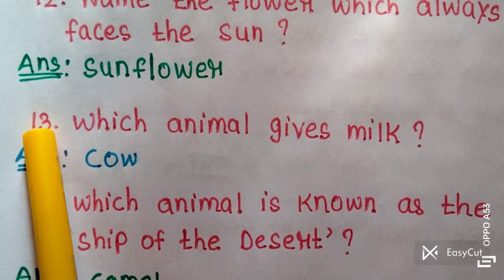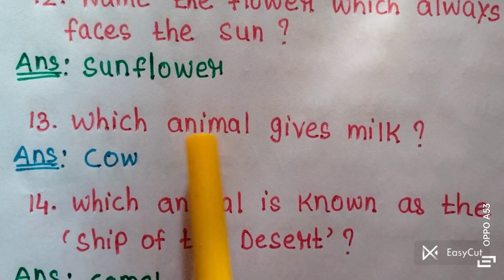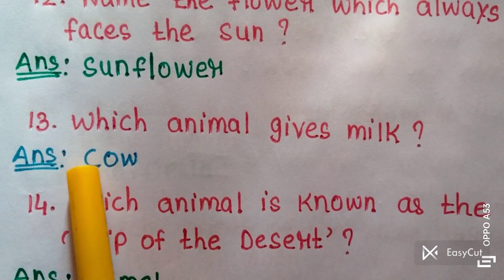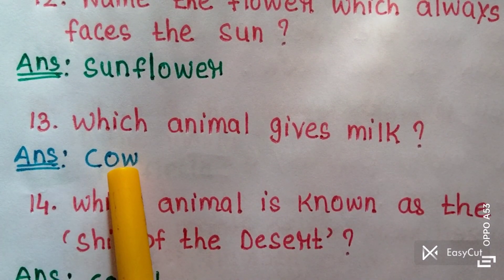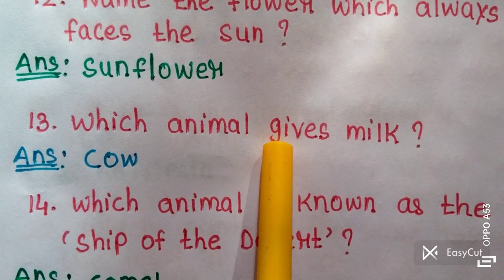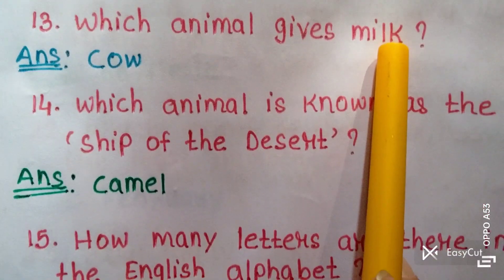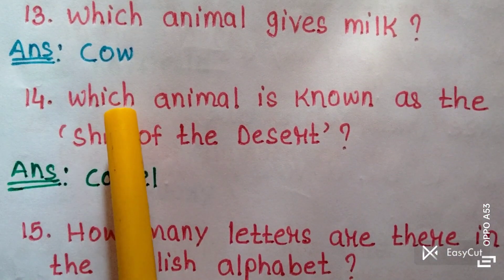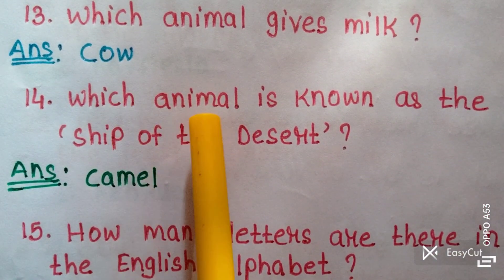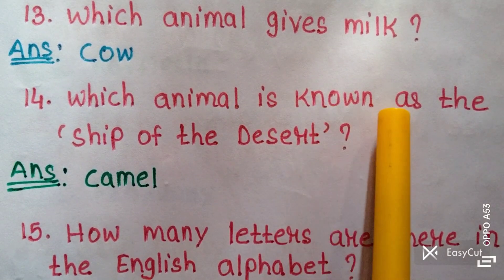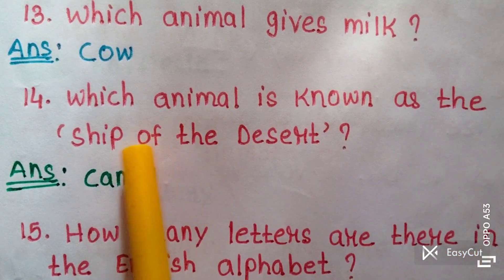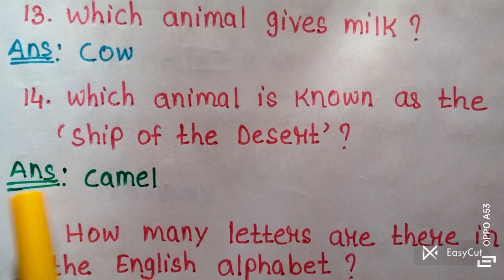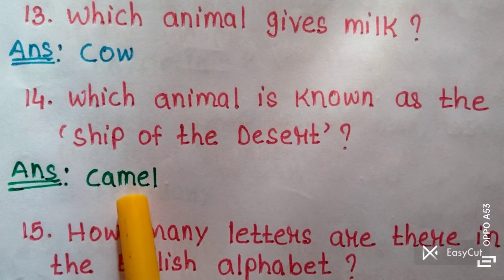Question thirteen: Which animal gives milk? Answer: Cow. Cow gives us milk. Question fourteen: Which animal is known as the ship of the desert? Answer: Camel.